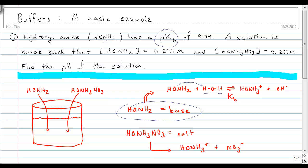So now that we know that, we find that a solution's been made that contains some of this hydroxyl amine with a concentration of 0.271 molar and then another substance, this unknown, unnamed nitrate compound with a concentration of 0.217 molar.